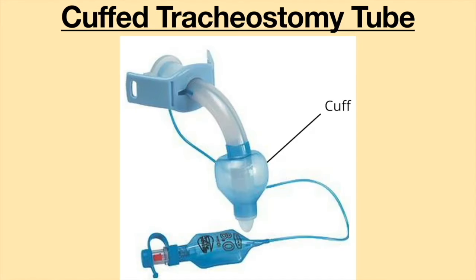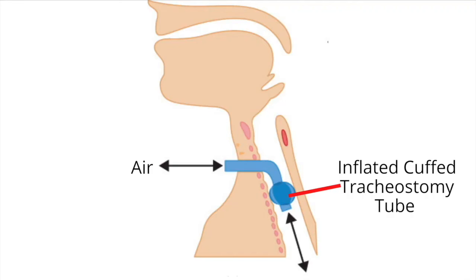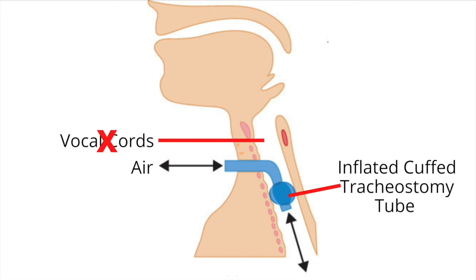If a person has a balloon-like feature on the tracheostomy tube, this is called a cuff. The cuff can be inflated or deflated. When the cuff on the tracheostomy tube is inflated, air flows in and out of the airway via the tracheostomy tube. This means air does not travel up the airway and through the vocal cords. With the cuff on the tracheostomy tube inflated, a person cannot speak.